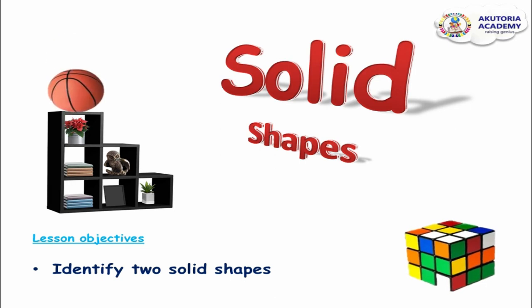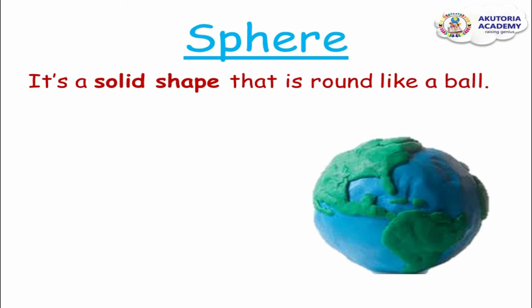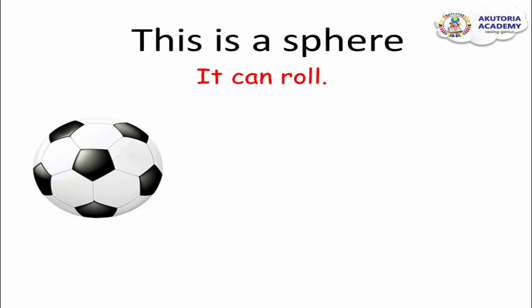Let's see the first solid shape. This is a sphere. Can you see this round thing on your screen? It's called a sphere. It's a solid shape and round like a ball. It's not a circle — it's a sphere. Can you say that word? Sphere. Okay, this is a sphere. A ball is a sphere. A ball has the shape of a sphere — it's not a circle, it's a sphere. That is why it can stand on its own.